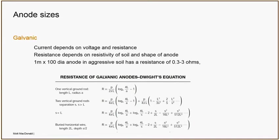For those who like complicated formulas, galvanic anodes give you lots of opportunities — formulas with brackets, logs, resistivities, squared and cubed terms. They are all working out the electrical resistance of a bit of metal you plonk in the ground, and they were based on earthing calculations developed by a bloke called Dwight. If you look at some numbers, a one-meter long, 100 mm diameter anode in a relatively aggressive soil has a resistance of about 0.3 to 3 ohms. Volts equals current times resistance, so if we know the voltage and the resistance we can work out the current per anode. A longer anode will have a lower resistance; a shorter anode will have a higher resistance.